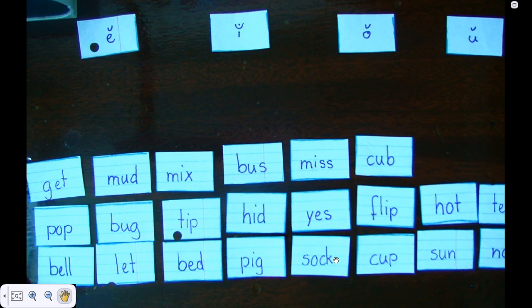Good morning, boys and girls. Today we're doing Word Sort 51, Day 2. We're looking at our short vowels, E-I-O-U, and we're looking for our CVC pattern so that we know they're really short vowels.